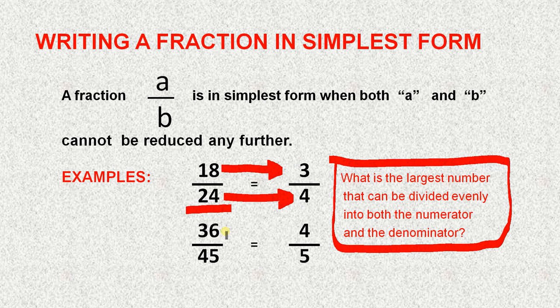In this example, thirty-six divided by nine gives you four. Forty-five divided by nine gives you five.